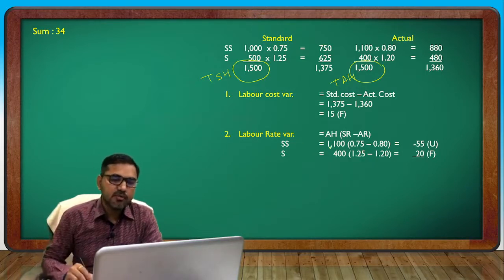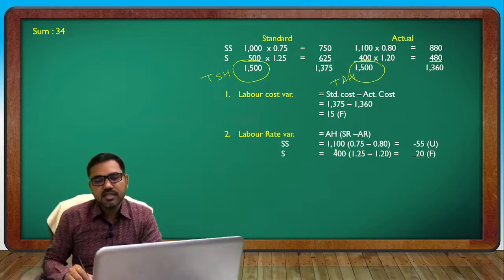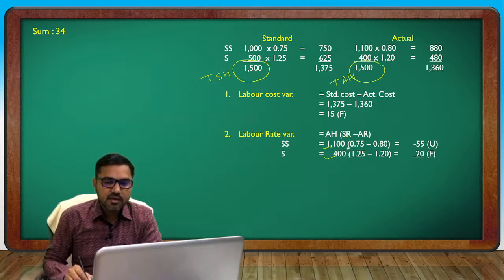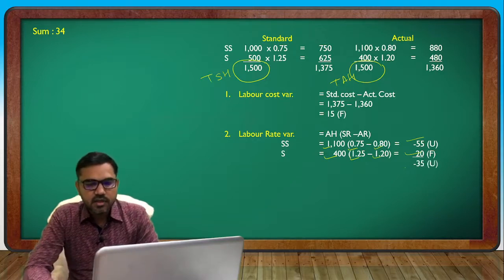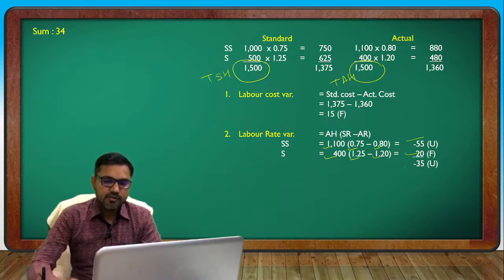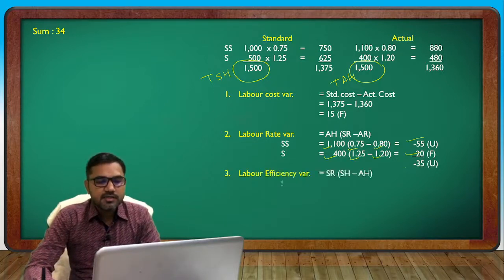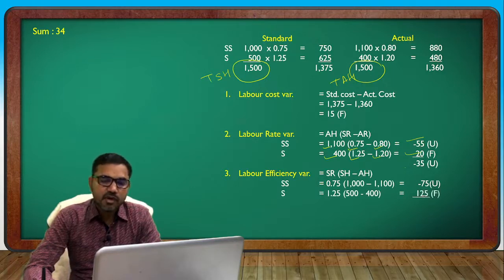For the valuation here, we take SR directly for both, then AR — we take AR directly for both. Then unfavorable efficiency: SR multiplied. Result is minus 75 unfavorable, plus 125 favorable, total 50 favorable.